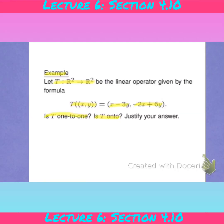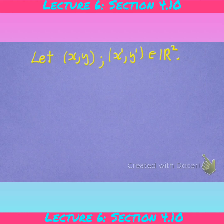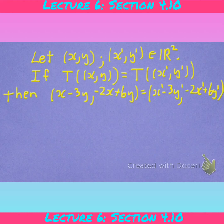We showed that T is definitely not onto. How about one-to-one — is T one-to-one? Let's take two points in the domain. If T at the point (x, y) is the same as T at the point (x', y'), then those two points need to be the same.